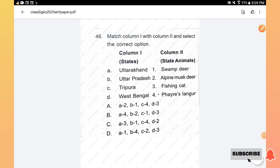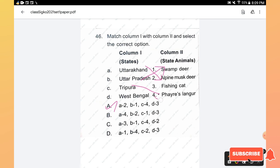Question number 46: Match column 1 with column 2 and select the correct option. In column 1, states are listed and column 2, state animals are listed out. Go through the question. Finally your answer would be option A is the right answer. Uttarakhand, the state animal is Alpine musk deer; Uttar Pradesh is swamp deer; Tripura is Phayre's langur; and West Bengal is fishing cat. Option A is the right answer.